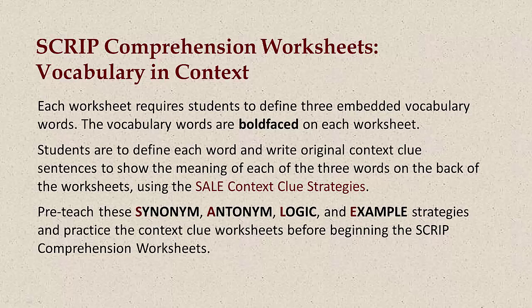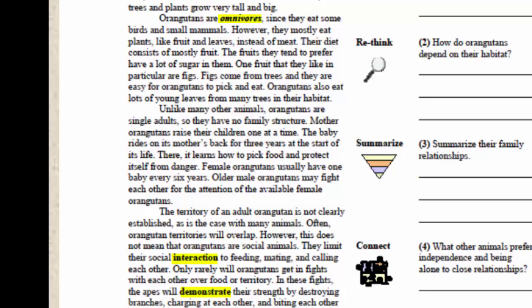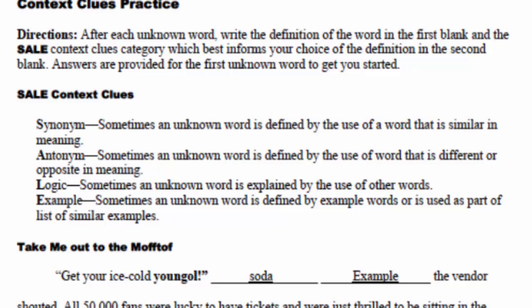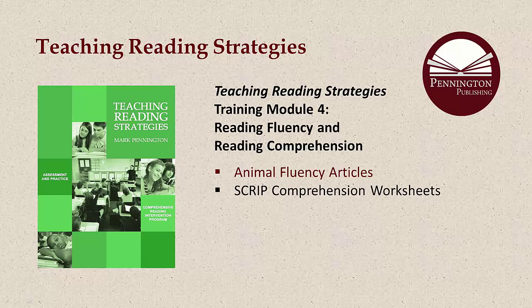Besides the SCRIPT comprehension strategy questions, each worksheet requires students to define three embedded vocabulary words. The vocabulary words are bold-faced on each worksheet. Students are to define each word and write original context clue sentences to show the meaning of each of the three words on the back of their worksheets using the SALE context clue strategies. Pre-teach these Synonym, Antonym, Logic, and Example strategies and practice the context clue worksheets before beginning the SCRIPT comprehension worksheets. Your students will benefit from the fluency, comprehension, and vocabulary instruction found in the Teaching Reading Strategies program.